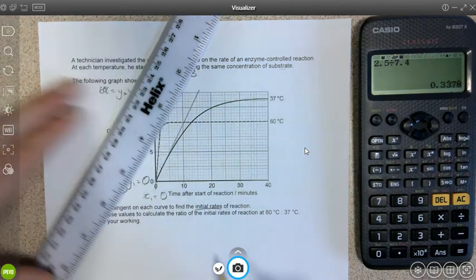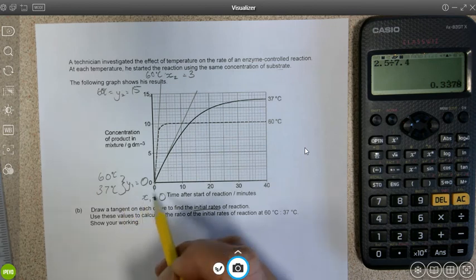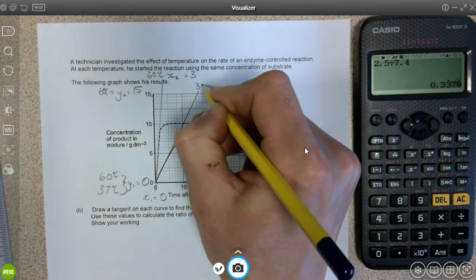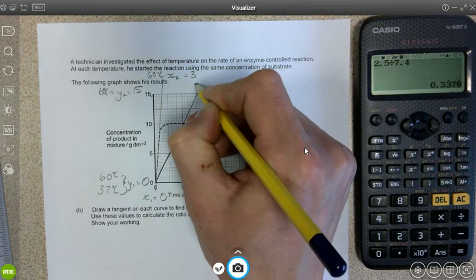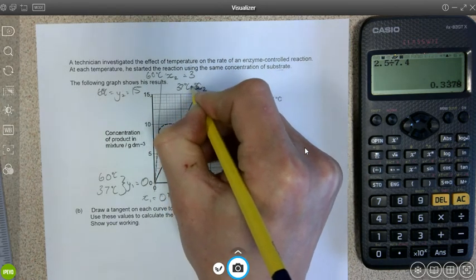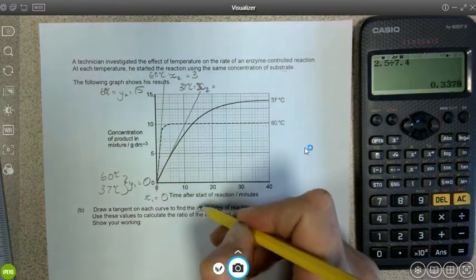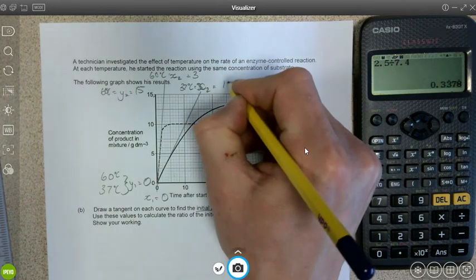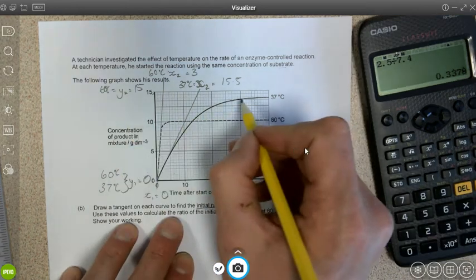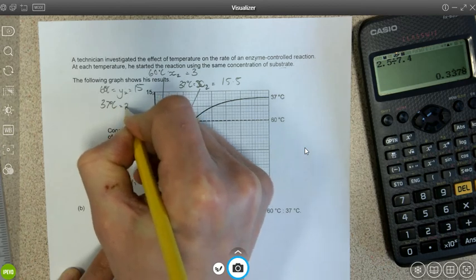Okay, so x1 for 37 is zero, x2 for 37, that's 15.5 minutes.